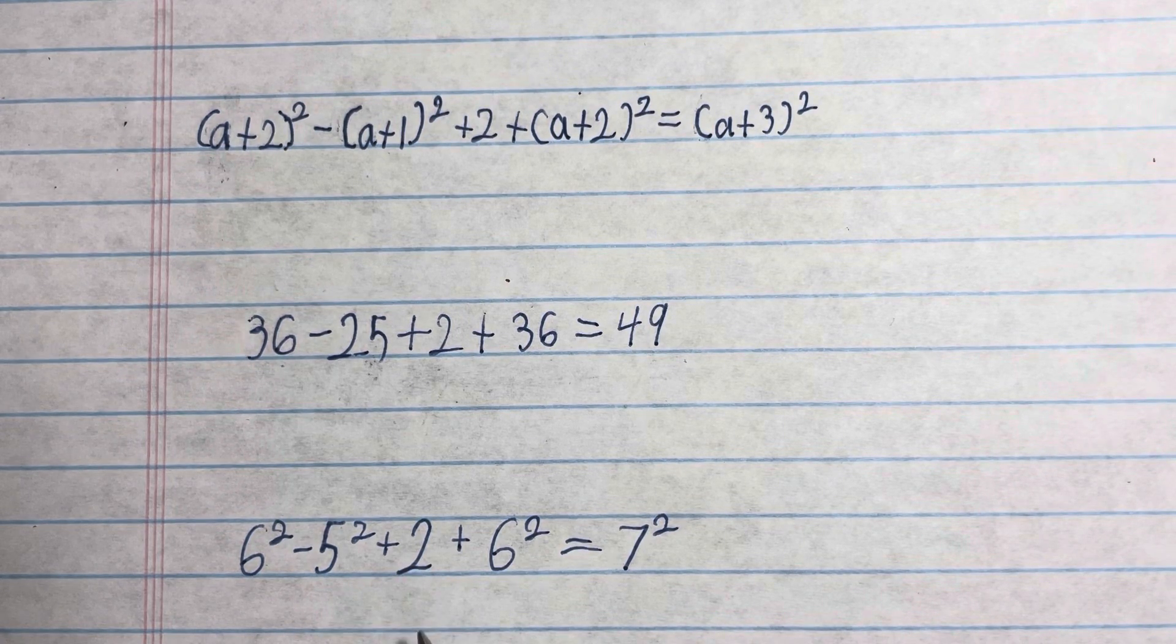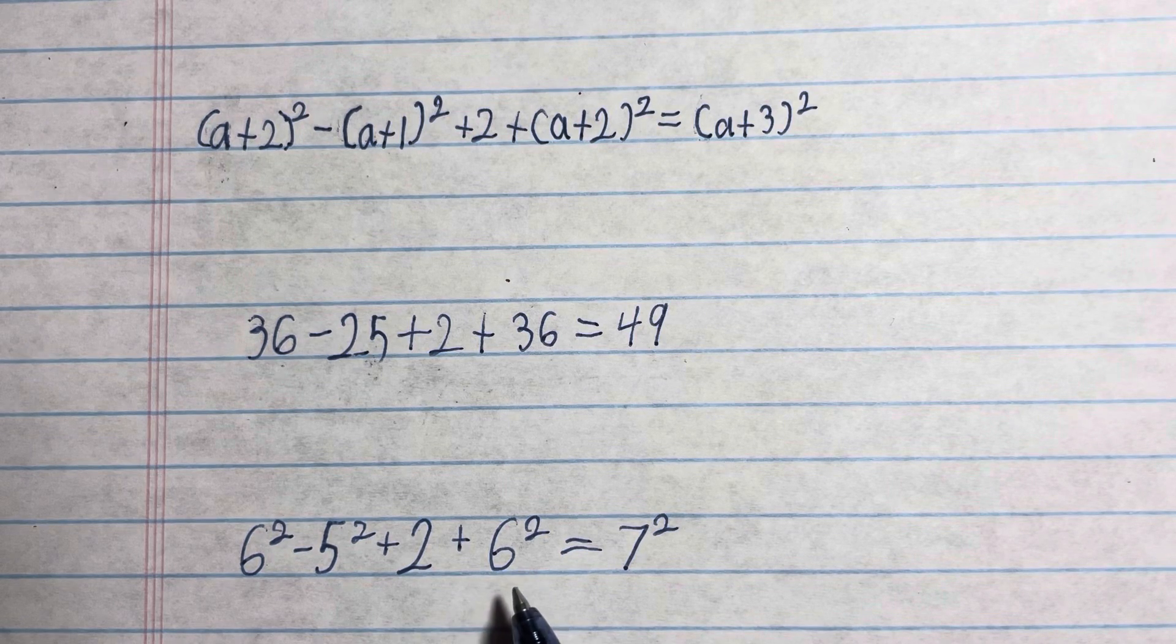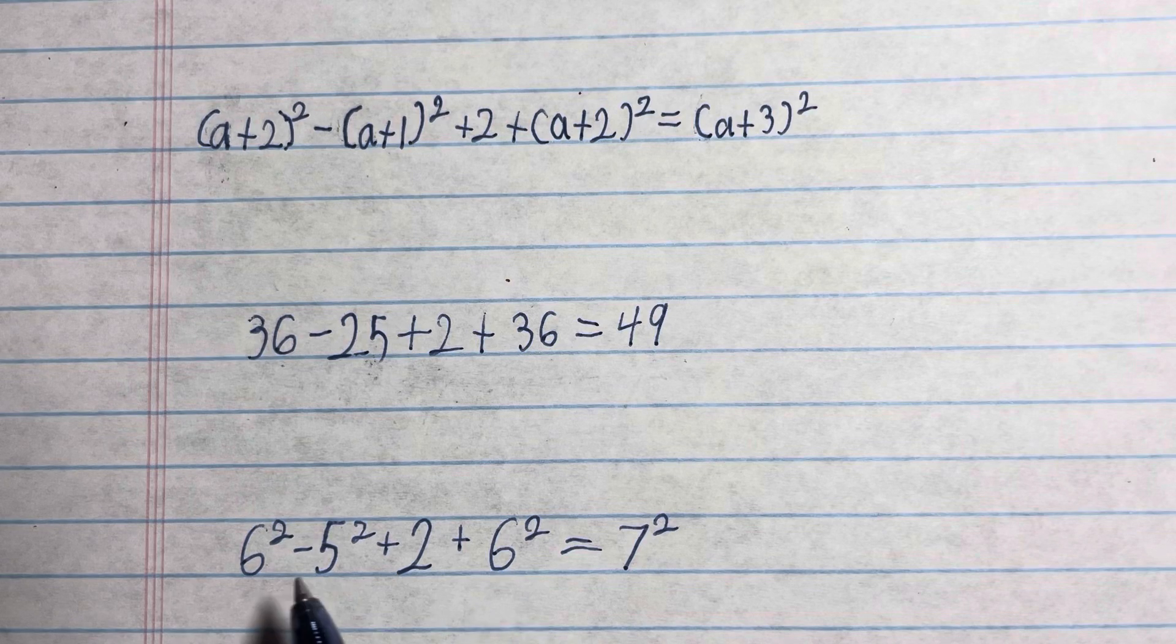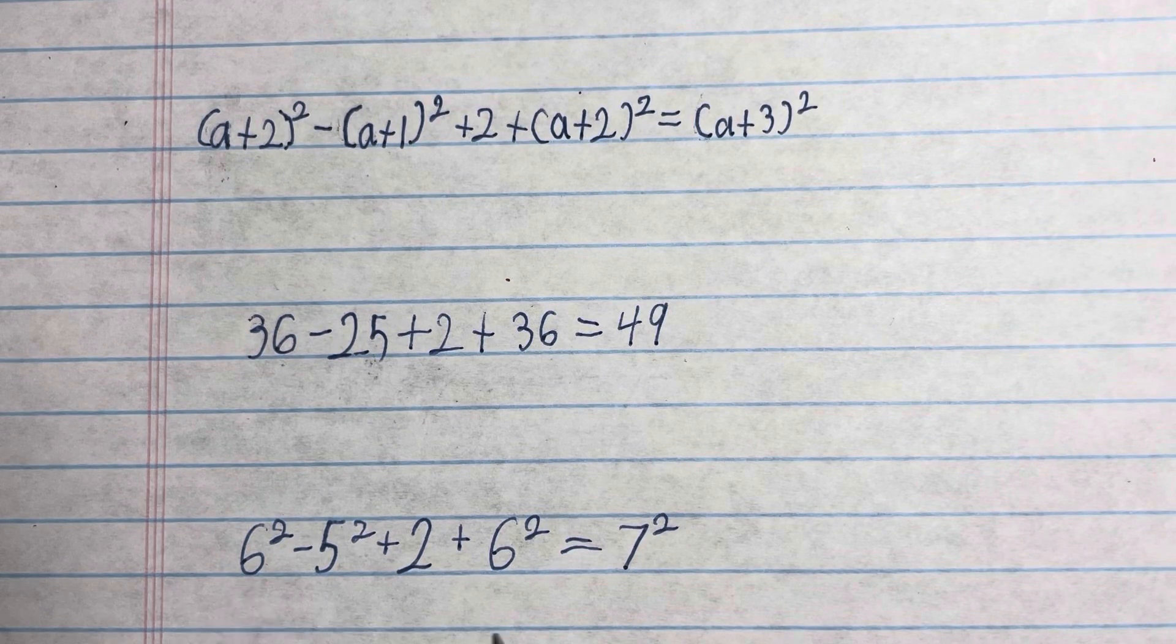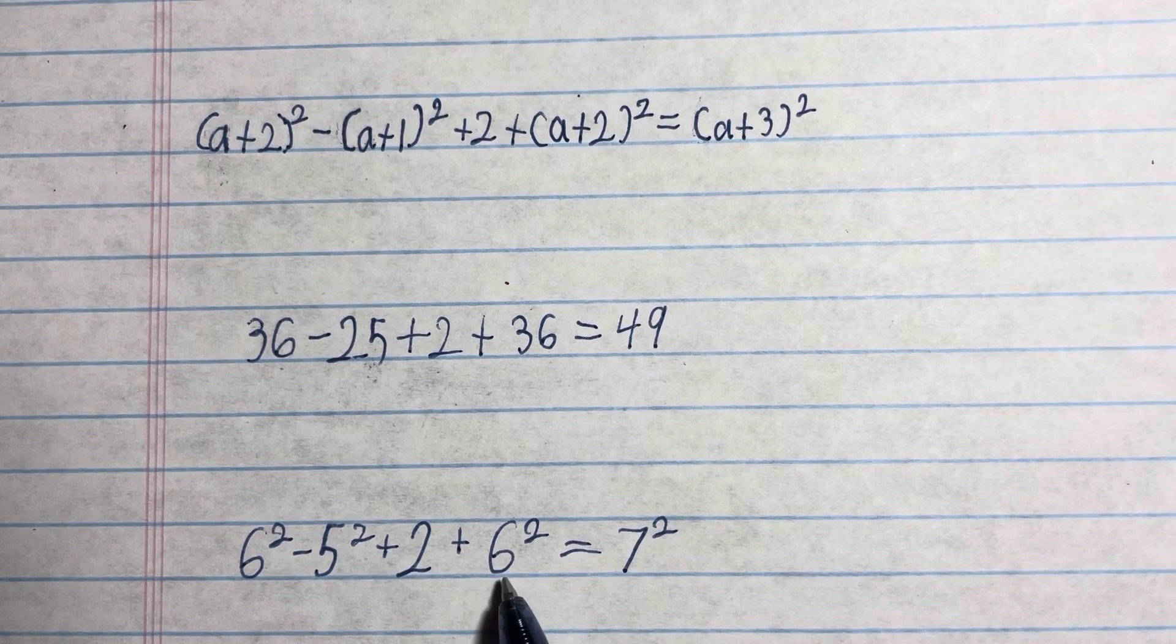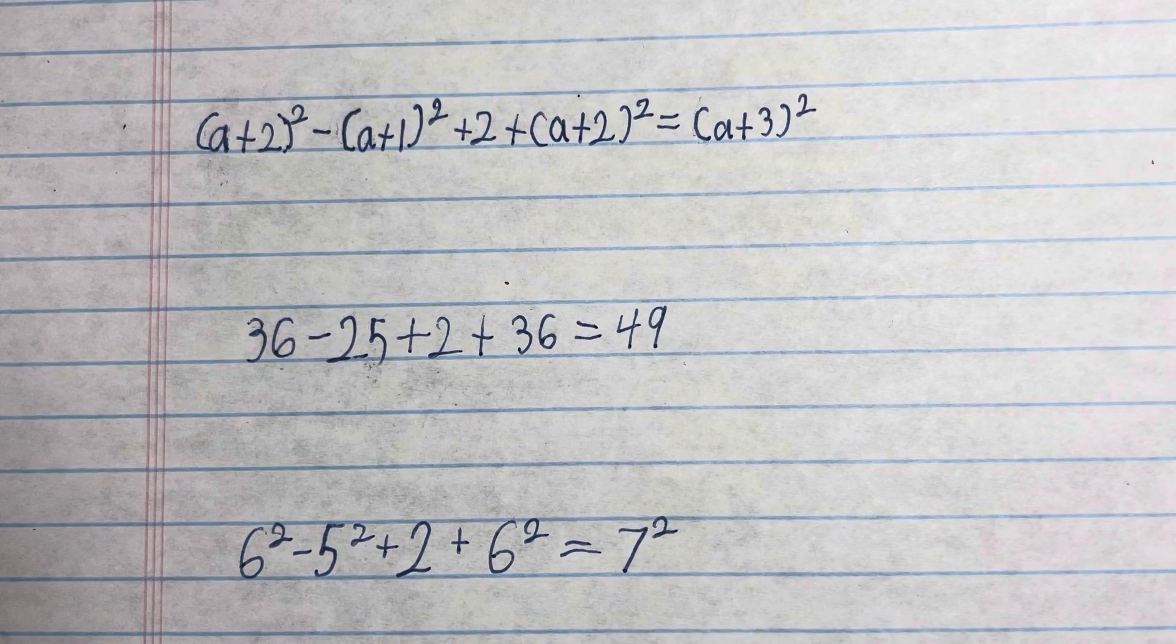and then you add 2 to it, and then you add 6 squared, or whatever the first number you started out with, it will equal the number above the number you started out with, squared.